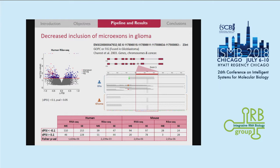We think that this may be indicative of the differentiation pattern in glioma, since microexons are related to neuronal differentiation. I'm also plotting an example of a microexon falling in the GOPC gene, which has a clinically relevant fusion described in glioblastoma. If we zoom in on this small microexon, you can see that we are able to find reads mapping there in glia, but this doesn't occur in the case of glioma.